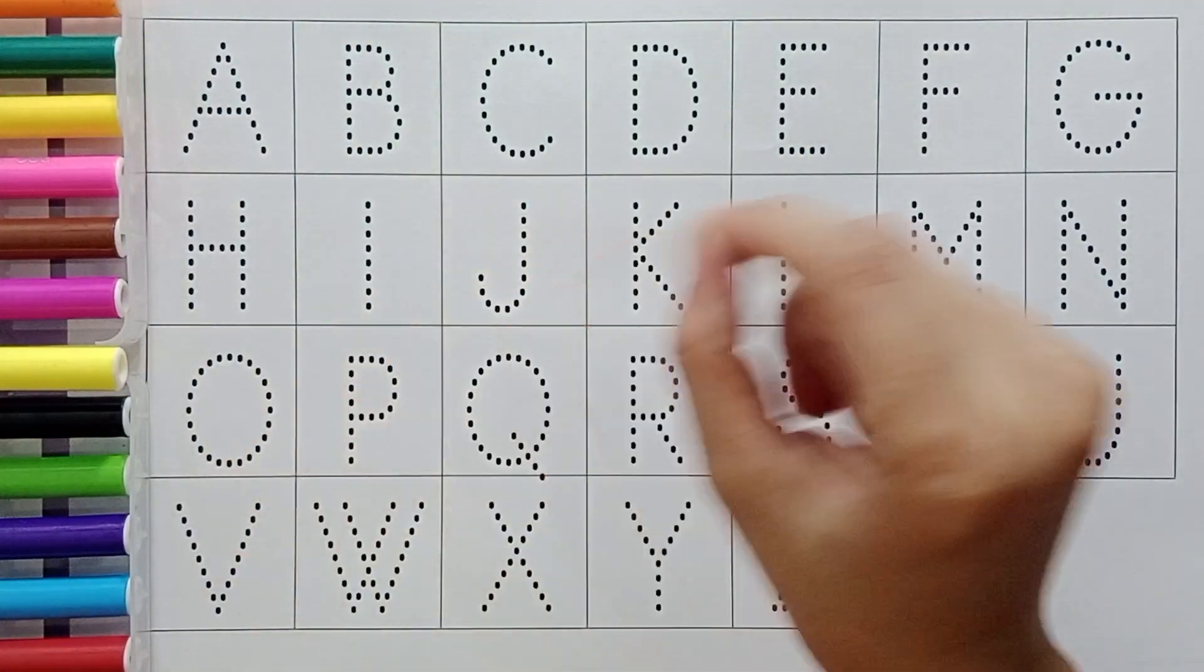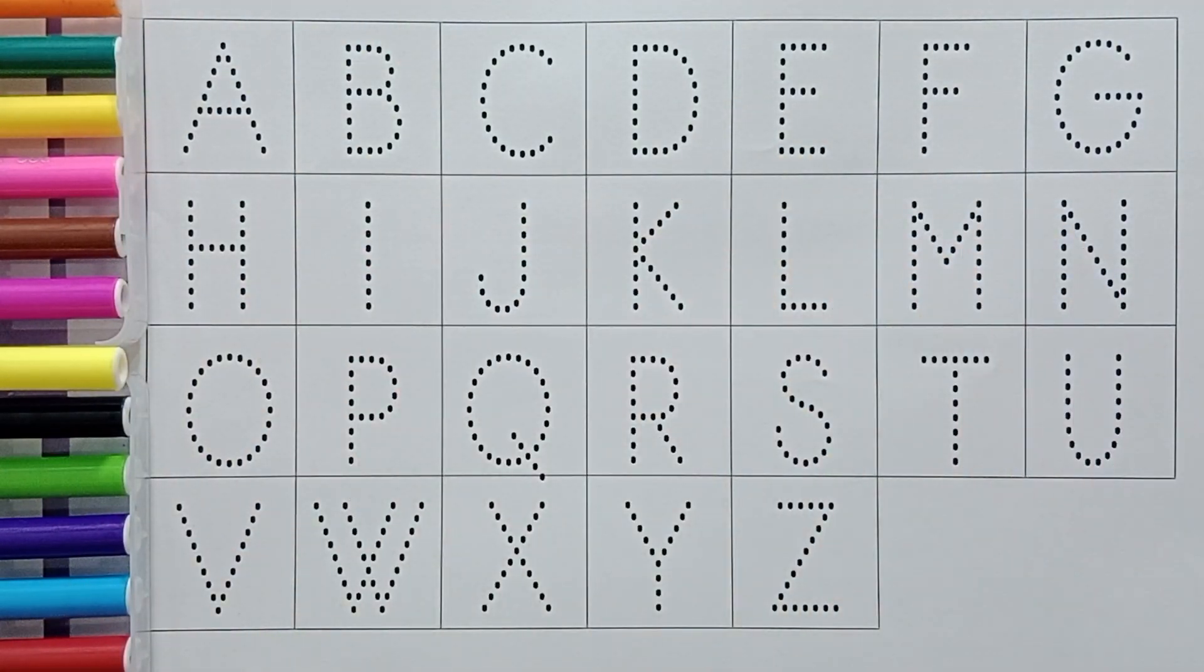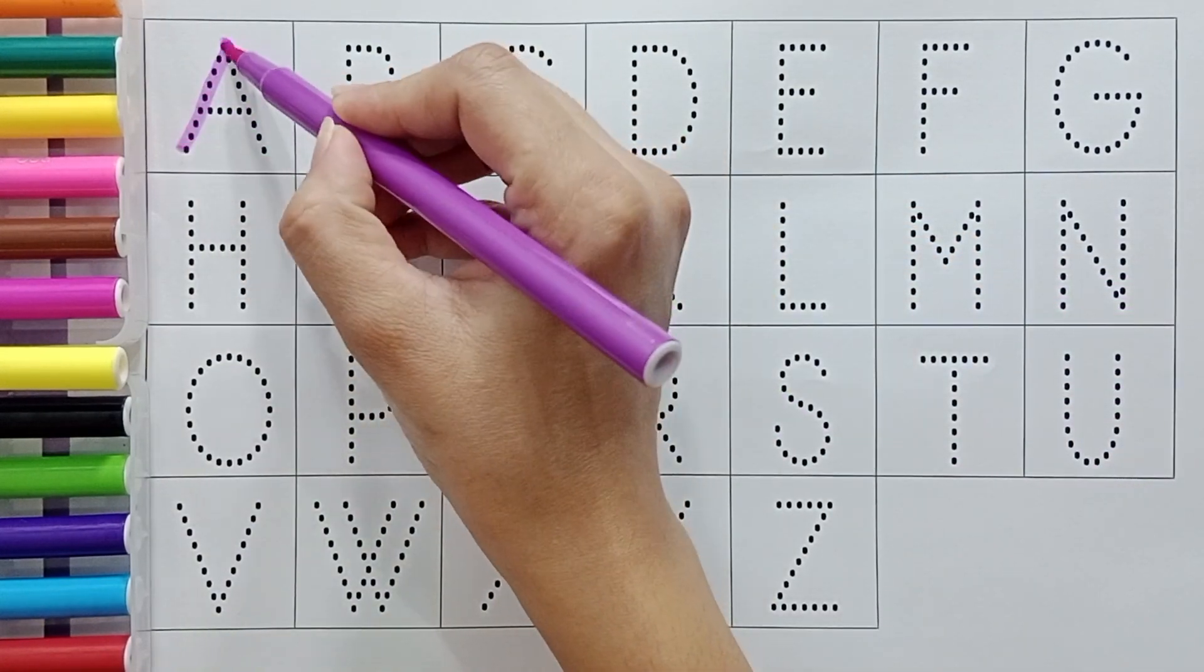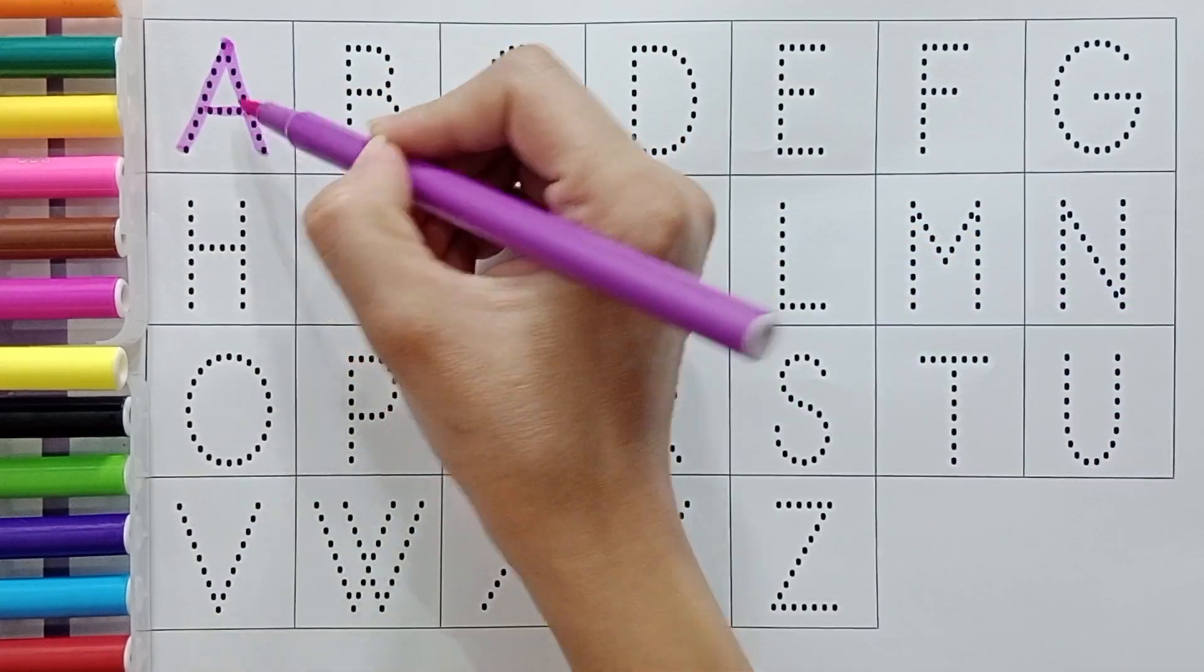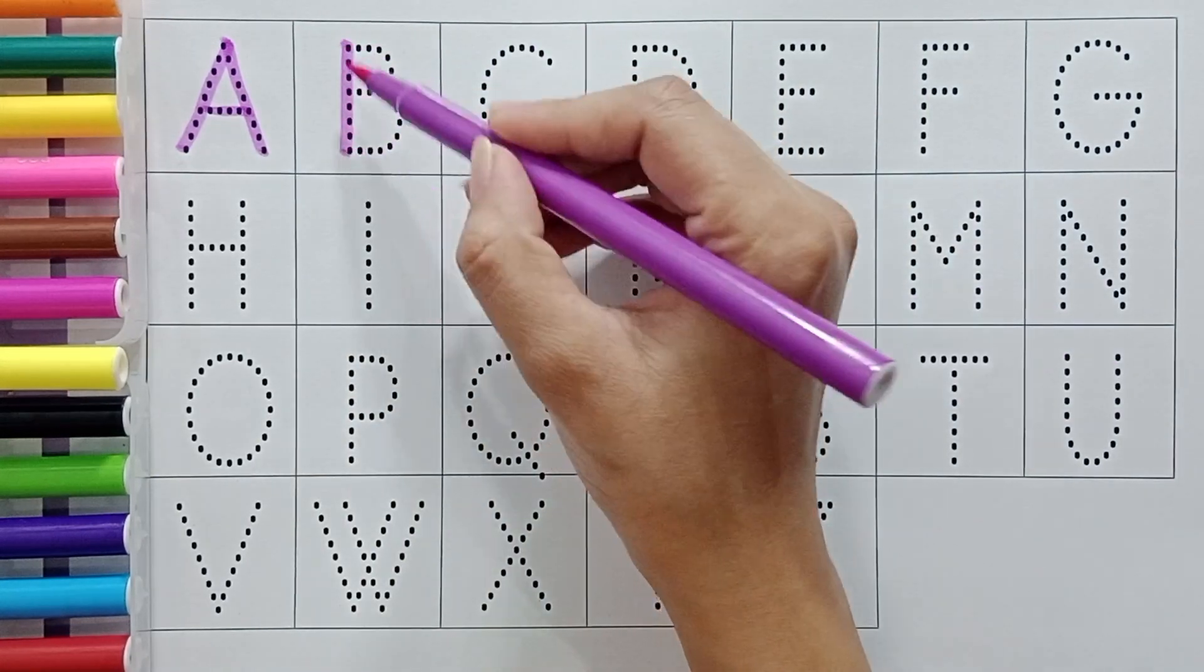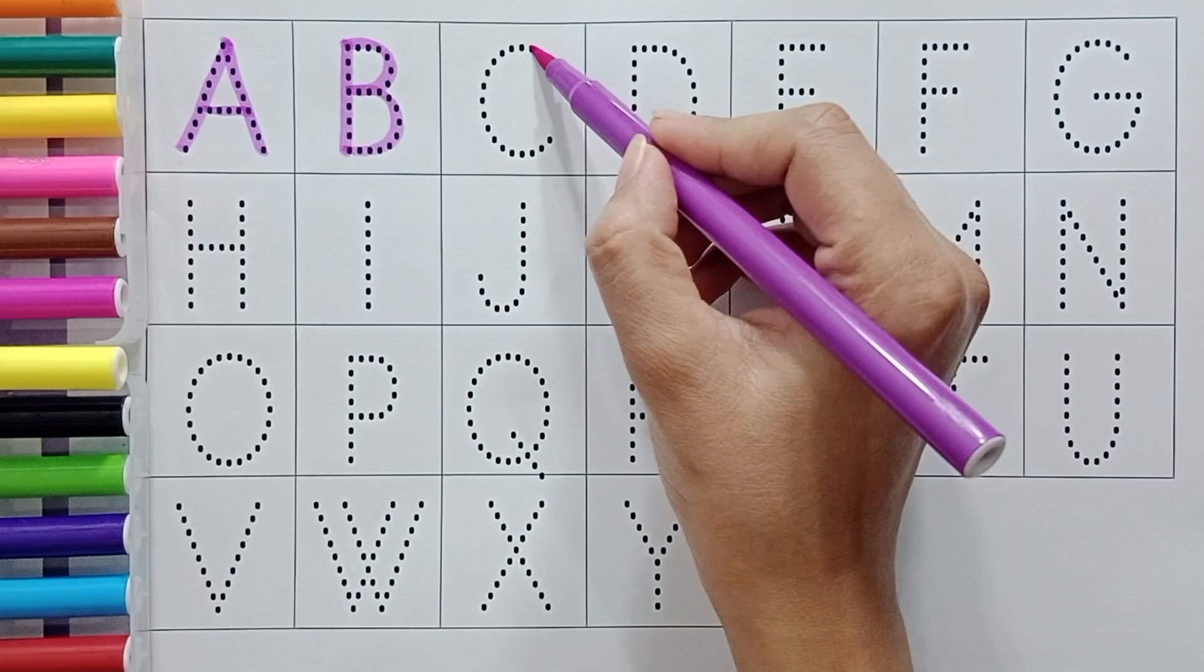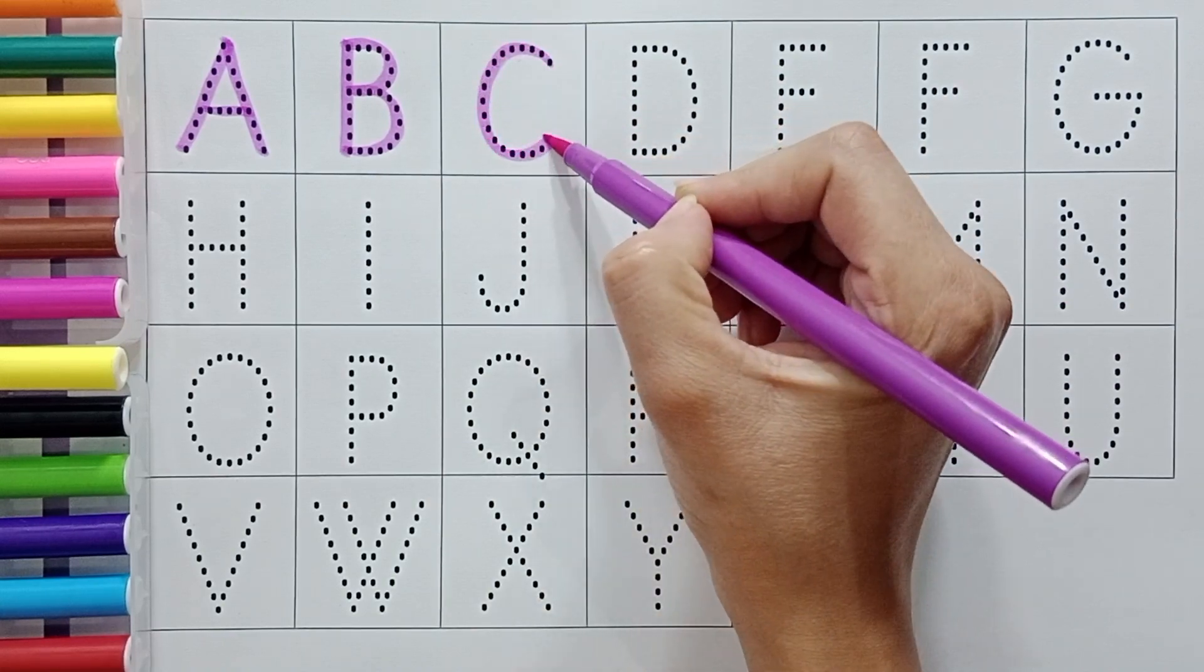Hello, kids. Let's write A, B, C. Purple color. A for apple. A for apple. B for ball. B for ball. C for cat. C for cat.